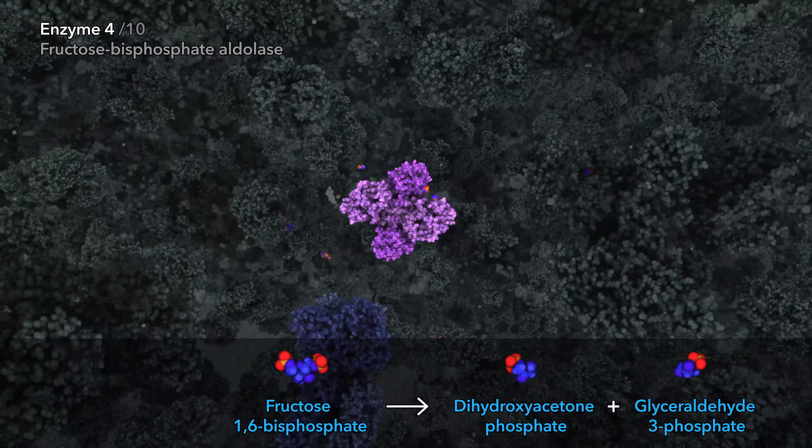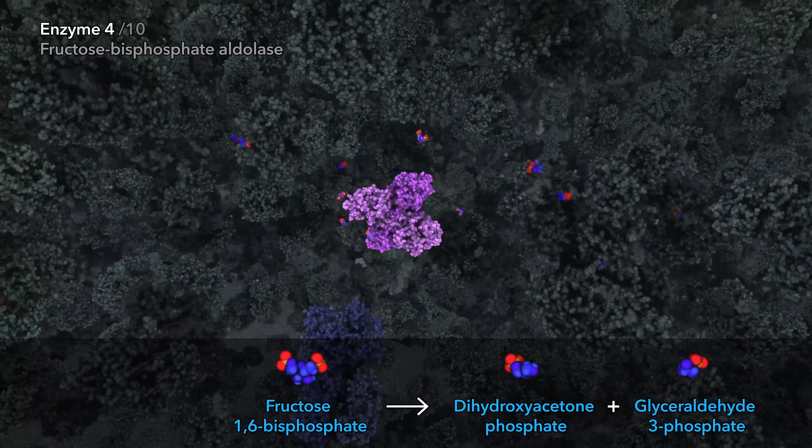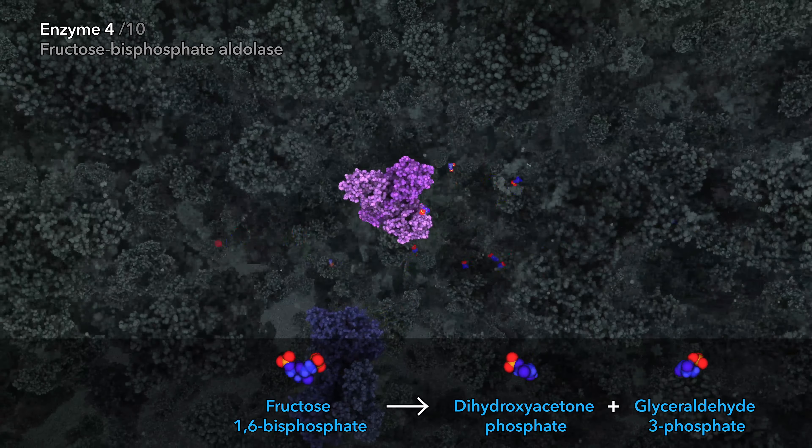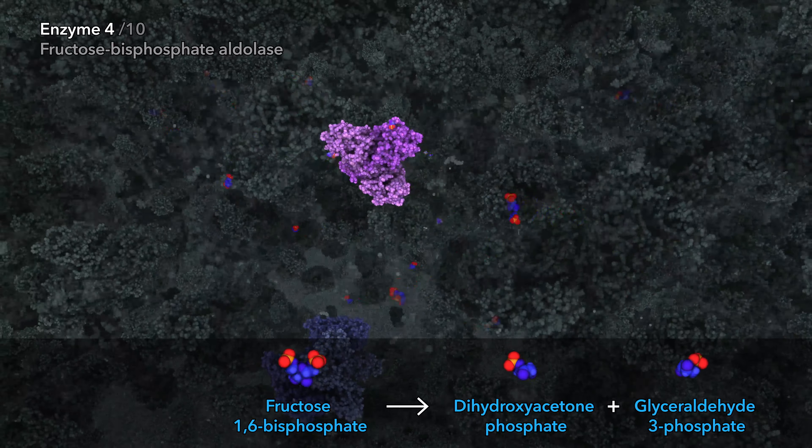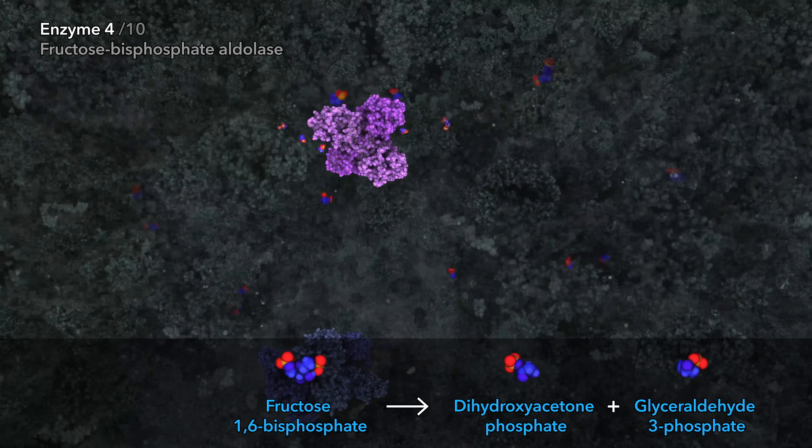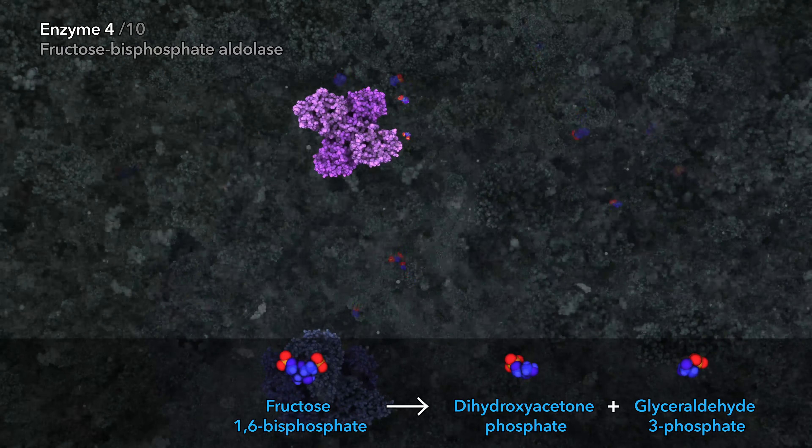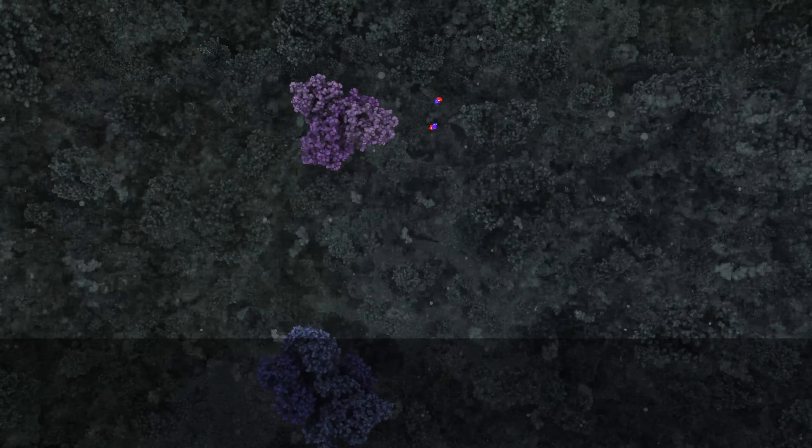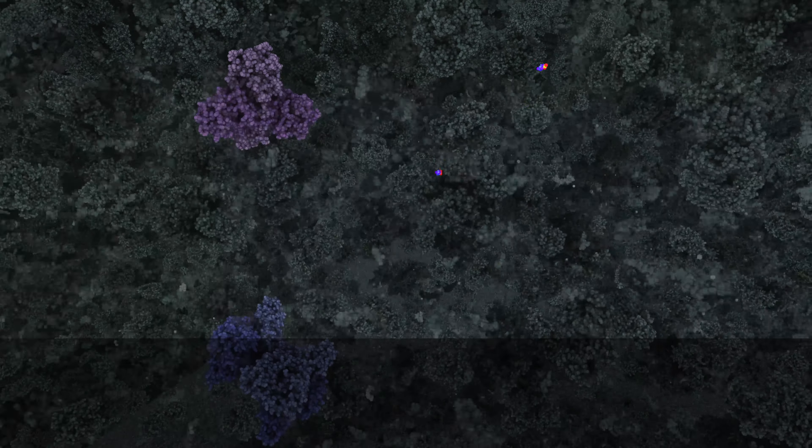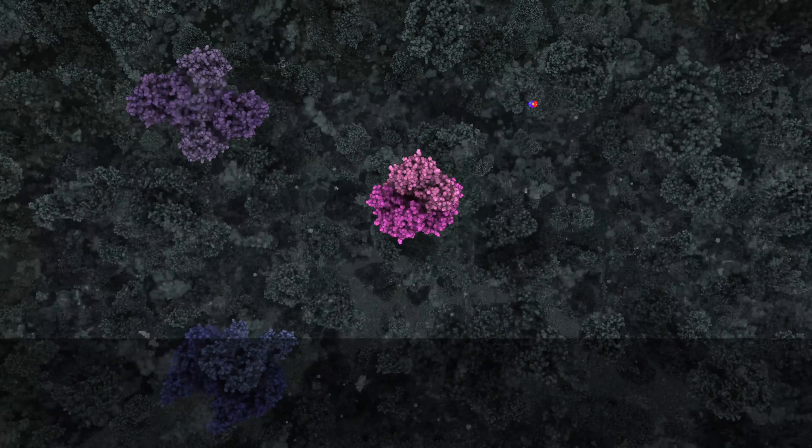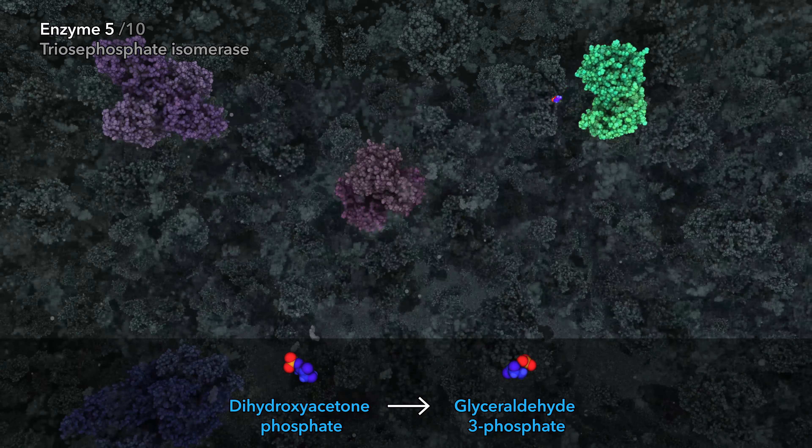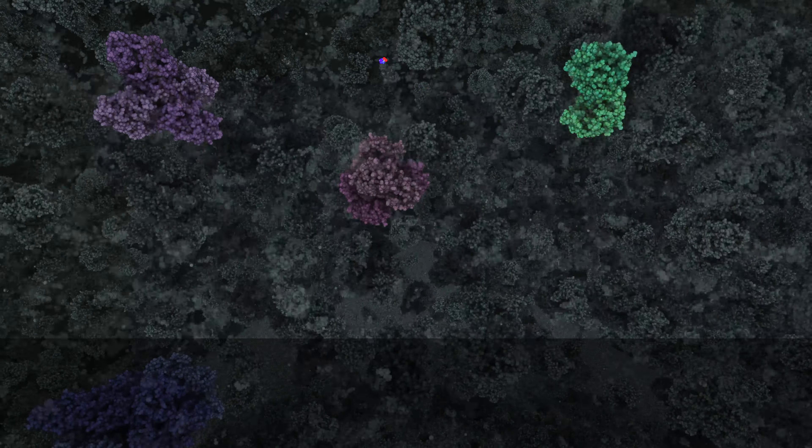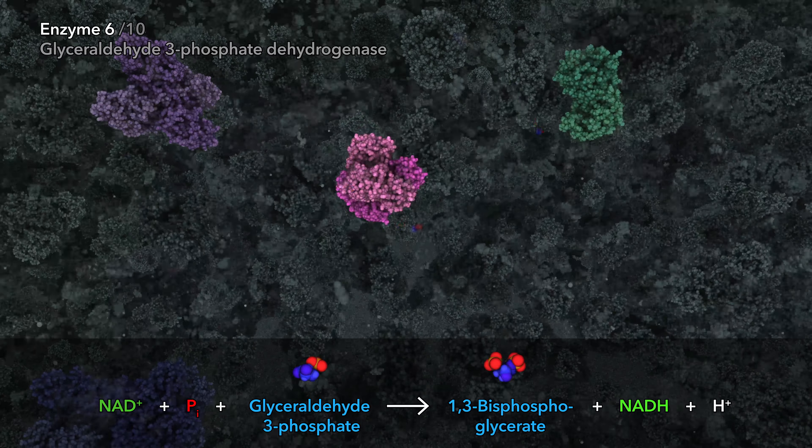The fourth enzyme cuts the molecule in half, creating two 3-carbon sugars, each with a single phosphate attached. The sugar products are isomers of each other. One product is ready to continue with the glycolysis pathway. The sugar isomer, dihydroxyacetone phosphate, must first be converted before continuing to the sixth enzyme.